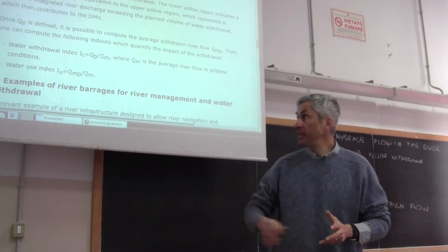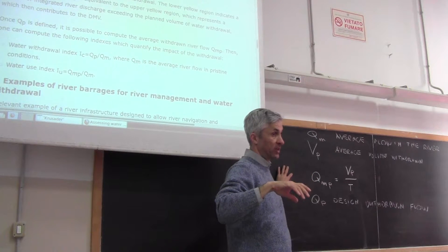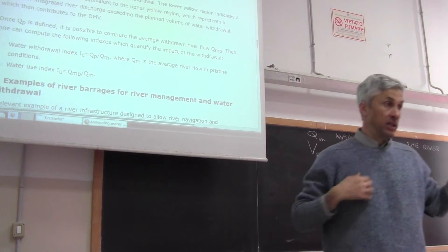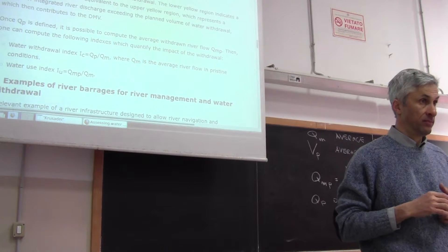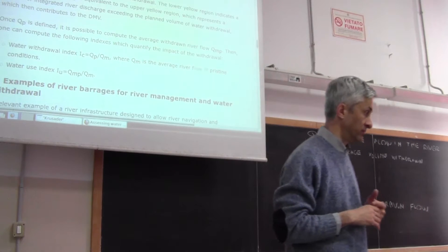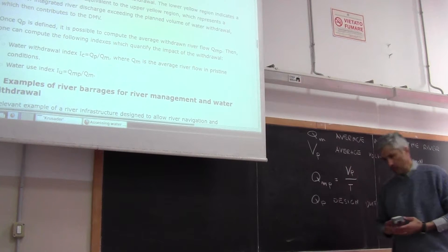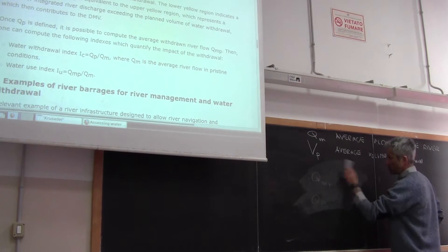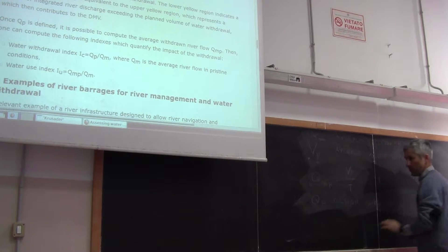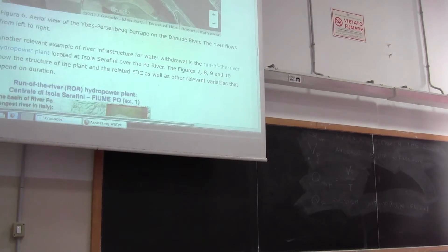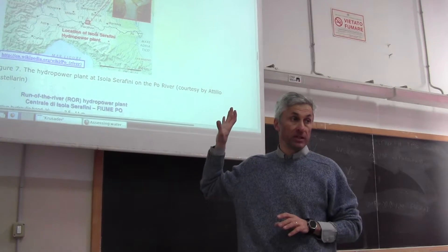If we want to preserve the environment, we need to decrease the water use index, and also the water withdrawal index, even though what is more connected to environmental quality is the water use index. Please remember how these two indexes are defined, because this could be a question at the exam. There are a couple of examples of river gauging stations. The second one takes some time to read — it is the Run-of-the-River hydropower plant over the Po River at Isola Serafini.